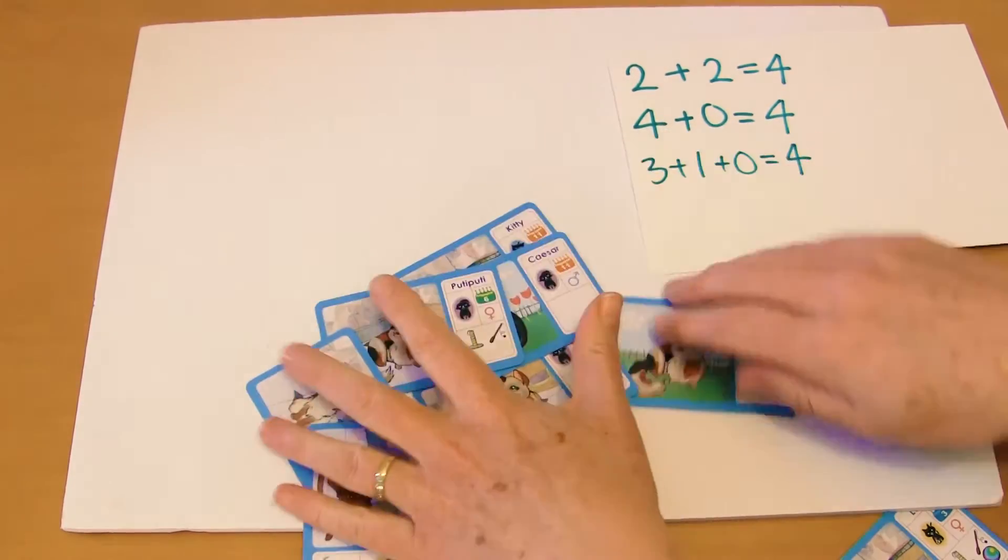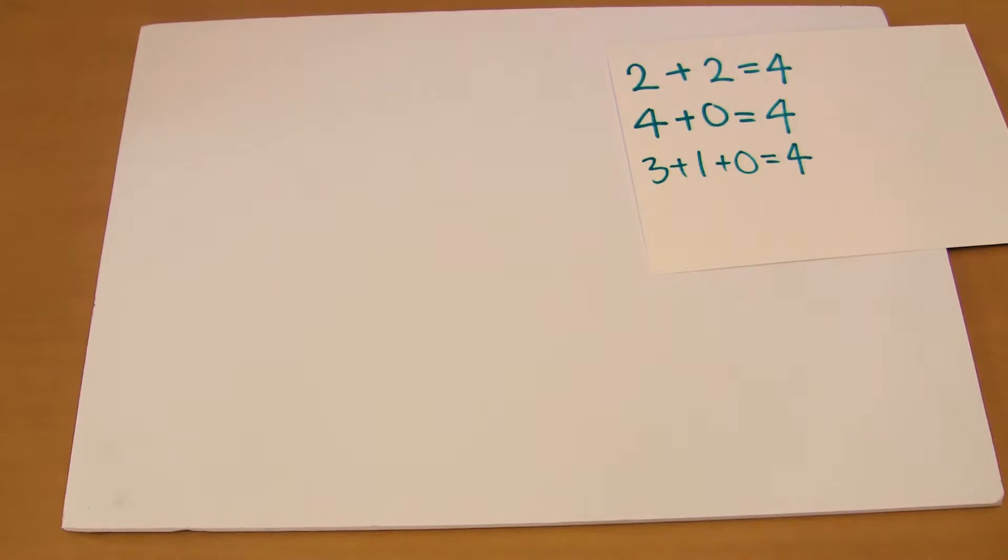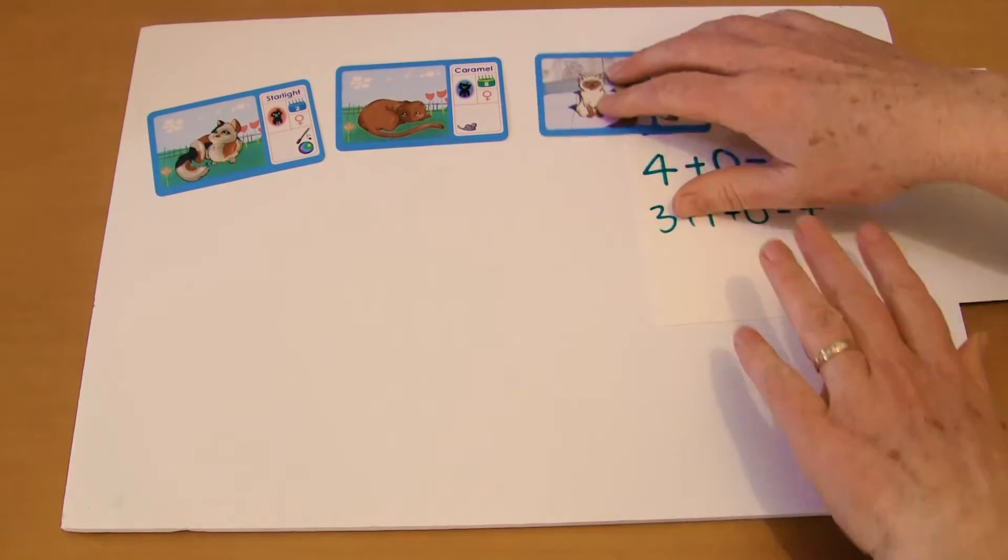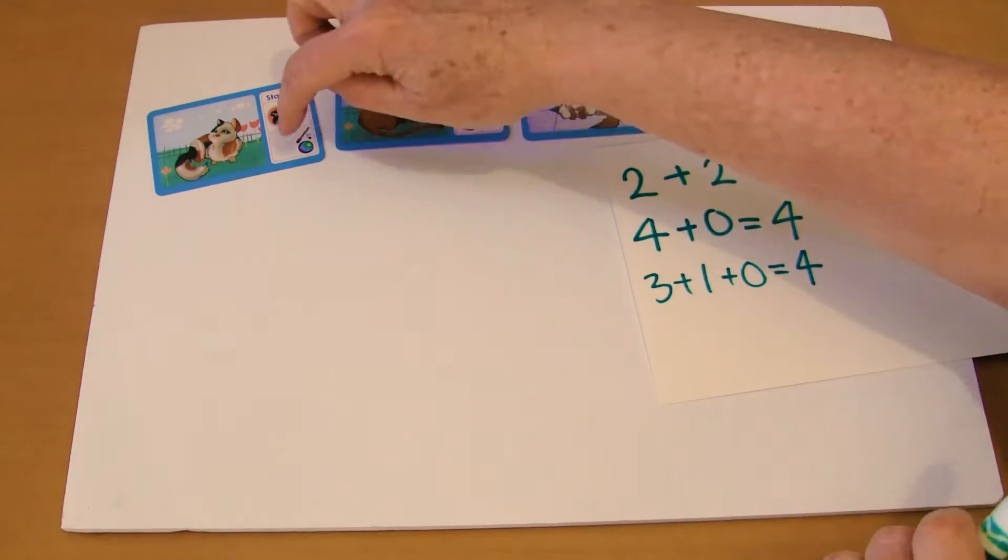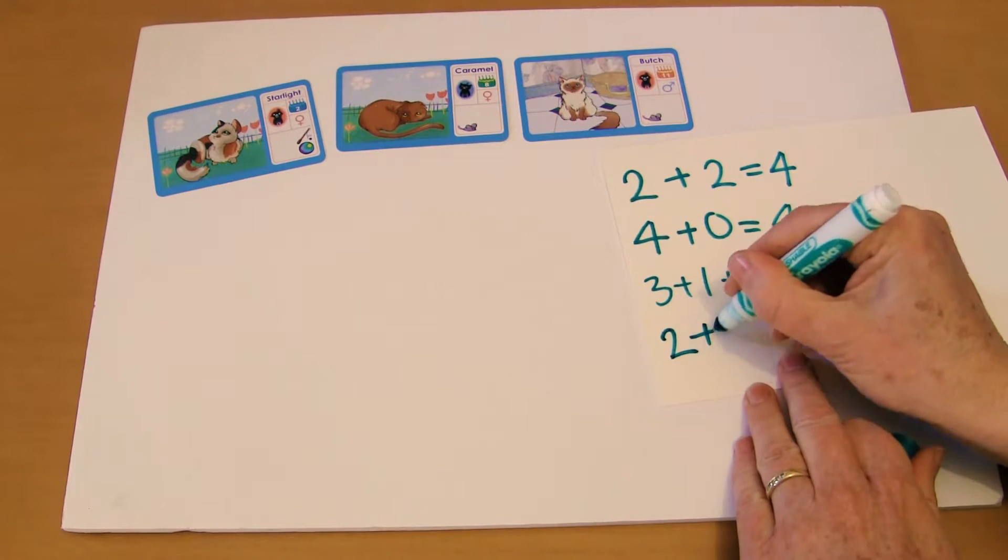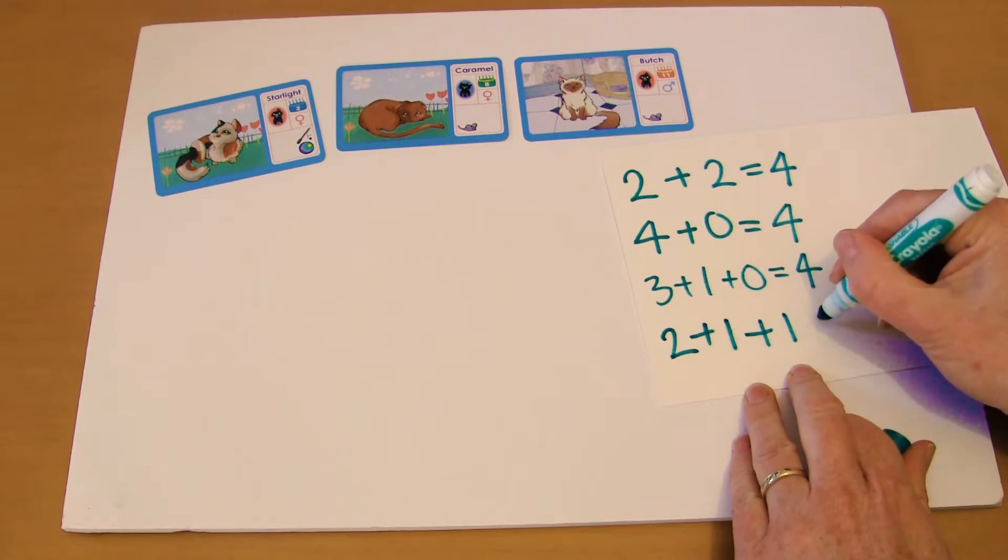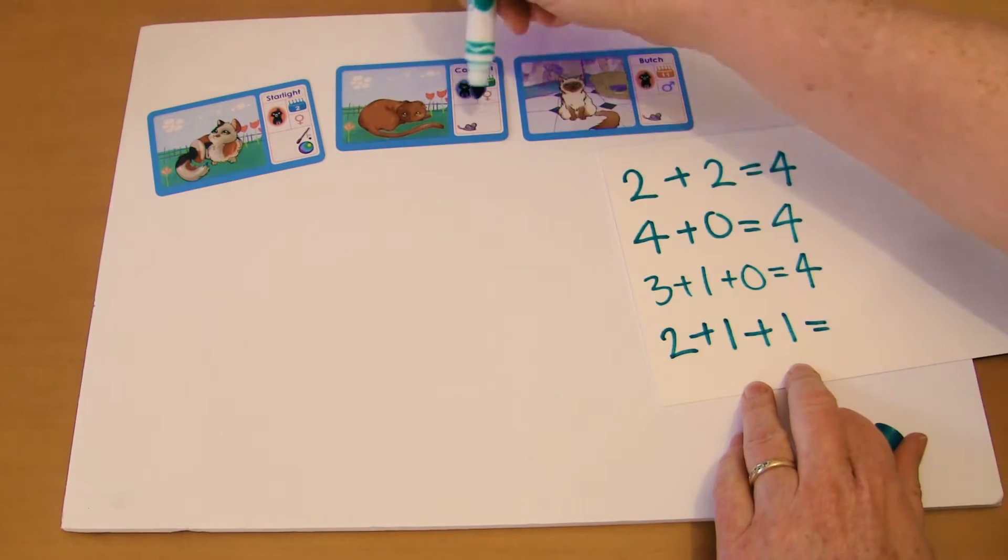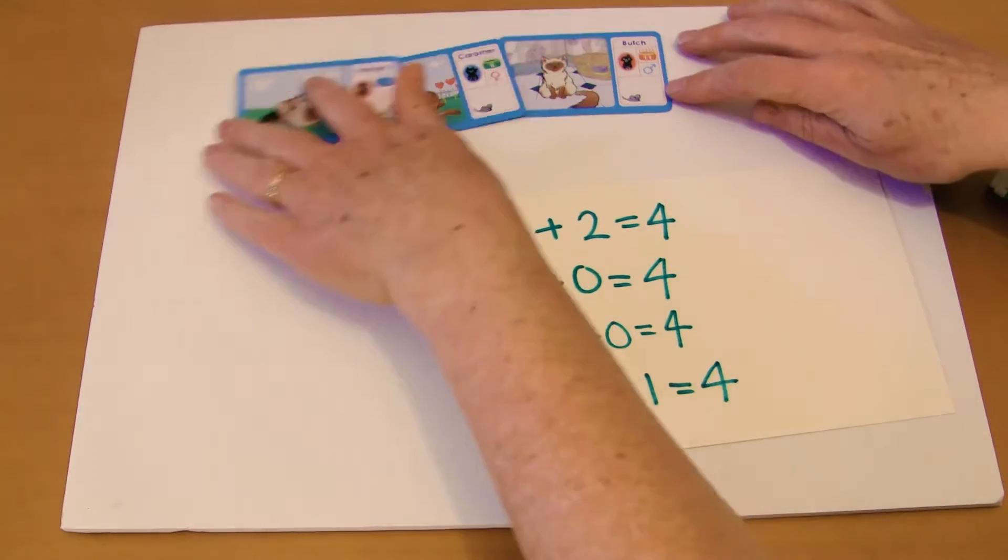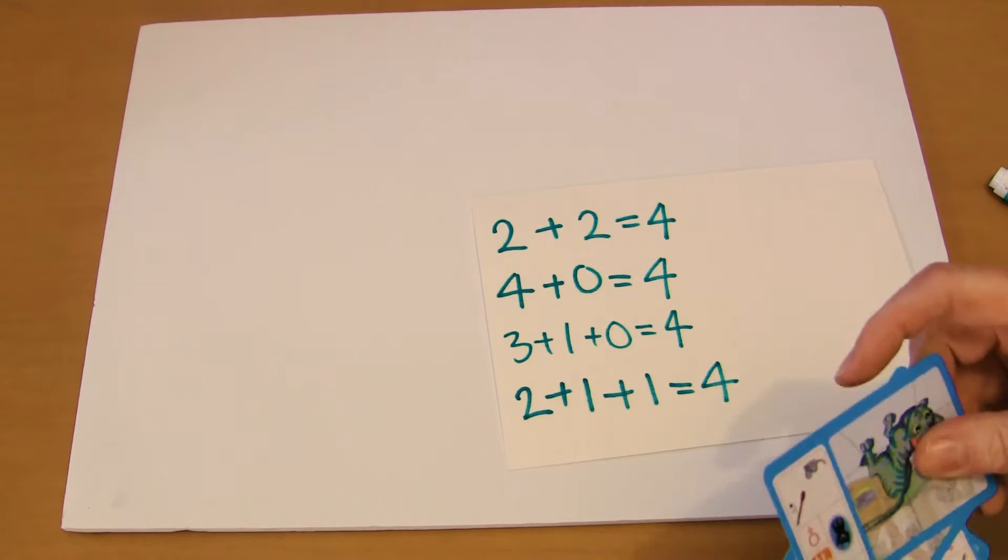Another way to do this actually, or for them to do, is to just take 3 cards and then work out how many toys there are all together. So we've got 2, 1, and 1, so we've got 2 plus 1 plus 1 equals 4. That one just turned out to be 4 as well, they won't always turn out to be 4 I would hope.